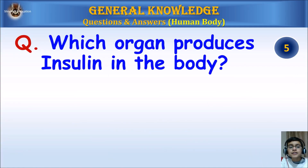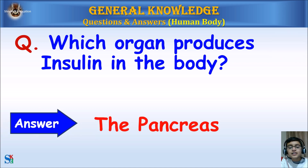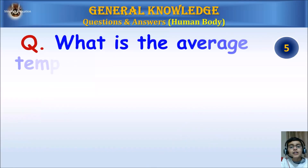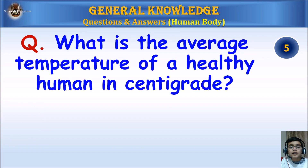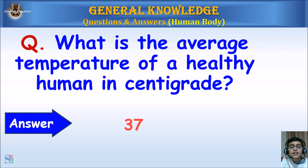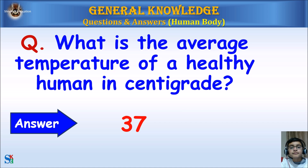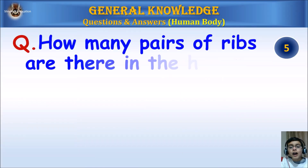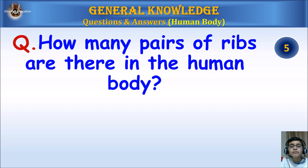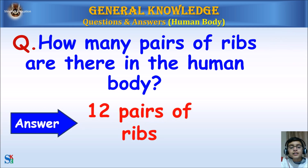Which organ produces insulin in the body? Answer: The pancreas. What is the average temperature of a healthy human in centigrade? Answer: 37 degrees Celsius. How many pairs of ribs are there in the human body? Answer: 12 pairs of ribs.